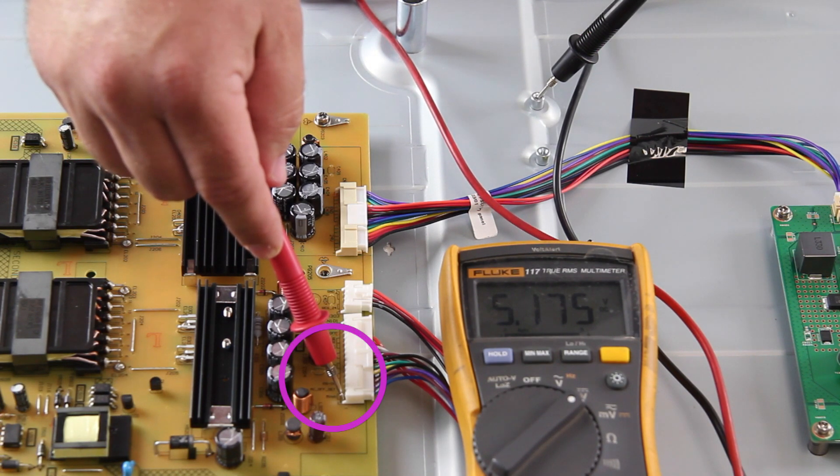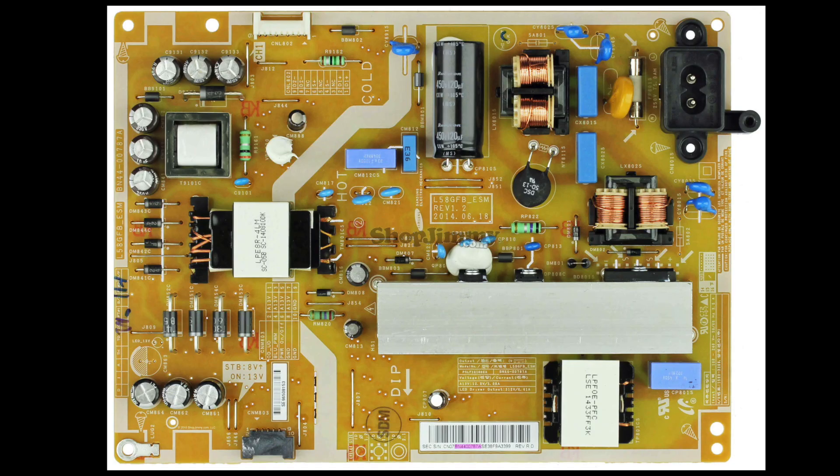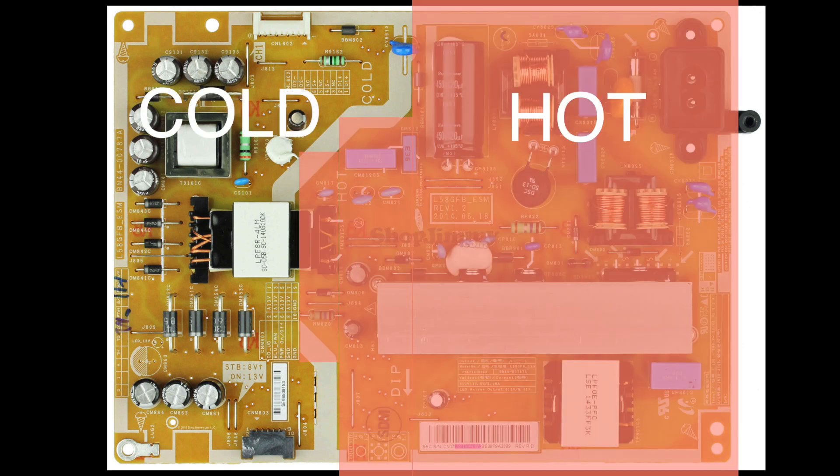We always place the positive test lead on the pin that we are reading the voltage of. Power supply boards are made up of a hot and cold side. You can see the hot side is defined within this outlined area and the remaining parts of the board are the cold side.